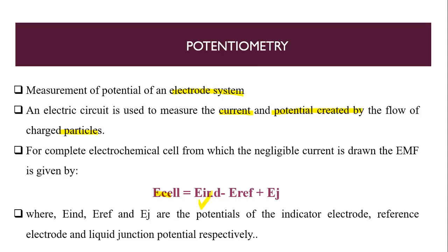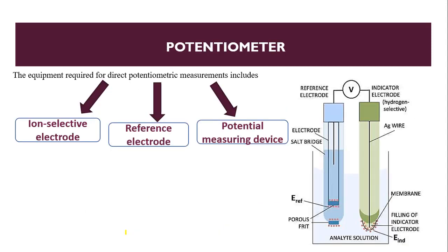In potentiometry we have two types of electrodes: E-IND, the indicator electrode, and E-REF, the reference electrode. We also have a junction, which is essentially a salt bridge. We will look at both electrodes in detail.